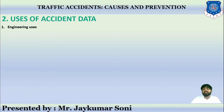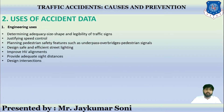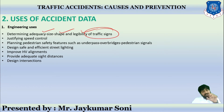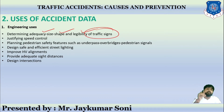The first category is engineering uses of accident data. This includes determining the adequate size, shape, and legibility of traffic signs — for example, establishing signs at accident-prone zones marked as 'Accident Prone Area.' The second engineering use is justifying speed control: if the majority of accidents are due to over-speeding, the maximum permissible speed must be reduced.